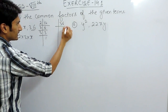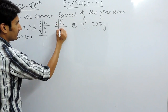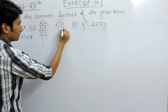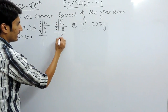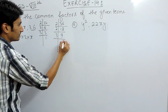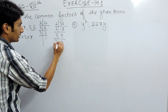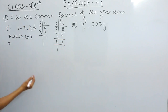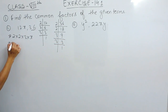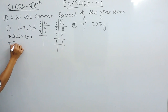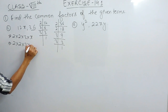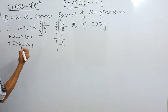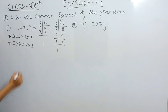36 can be divided by 2 to give 18, then 2 to give 9, and then 3 and 3. So 36 can be written as 2 × 2 × 3 × 3.